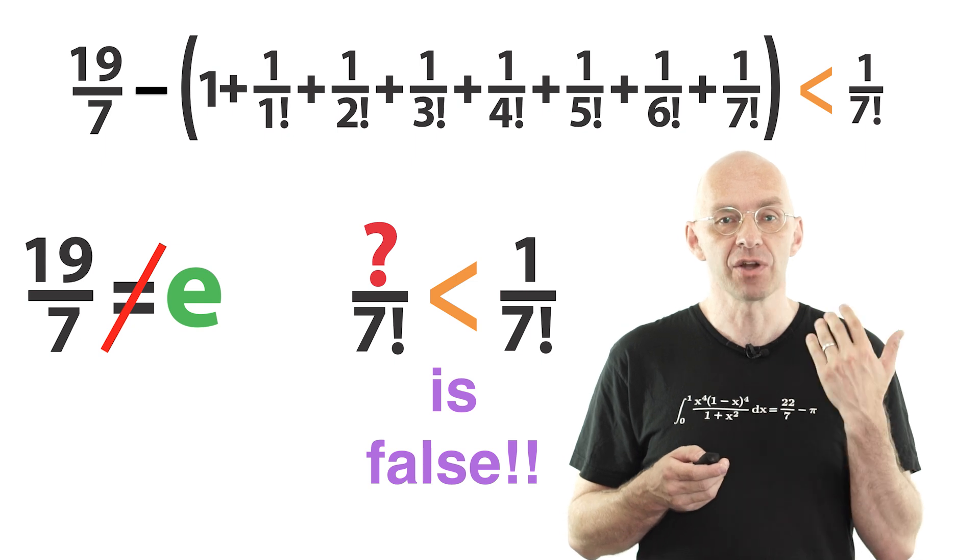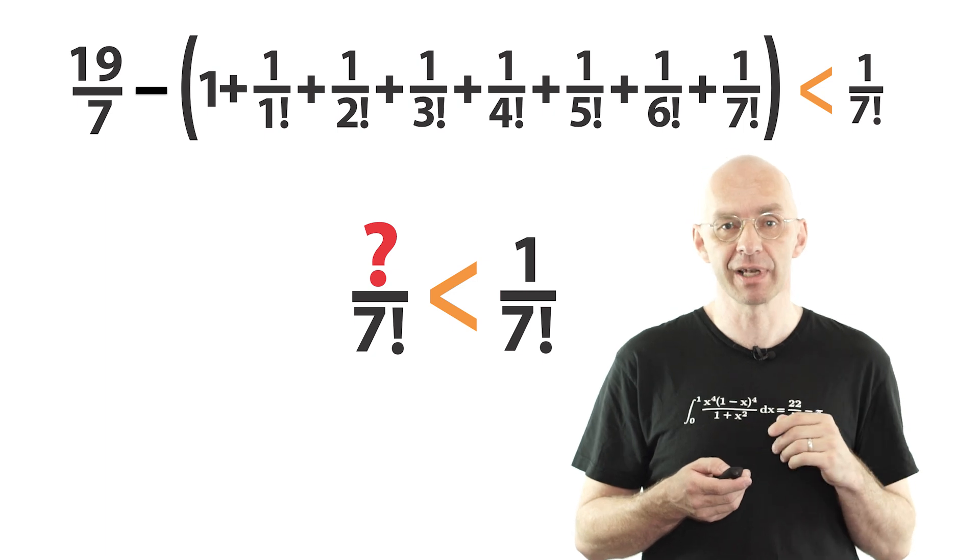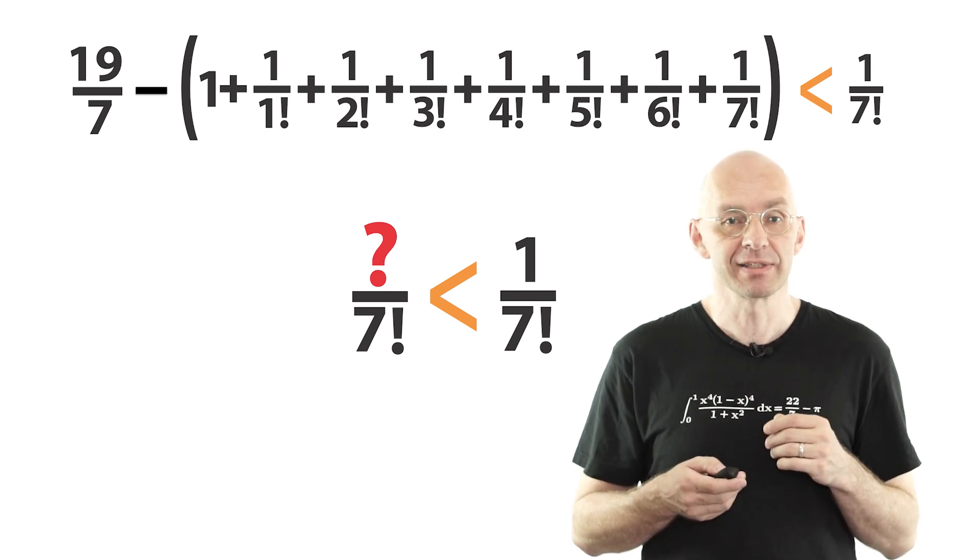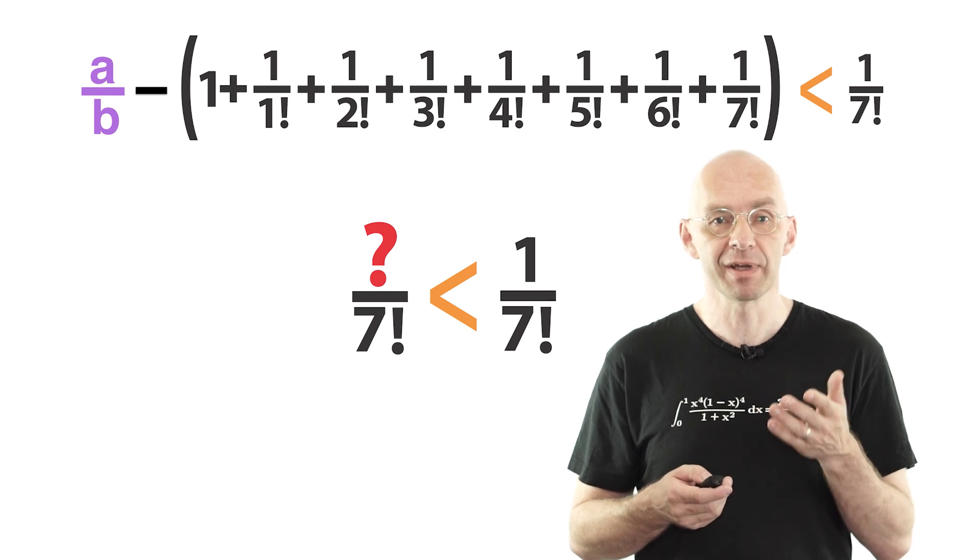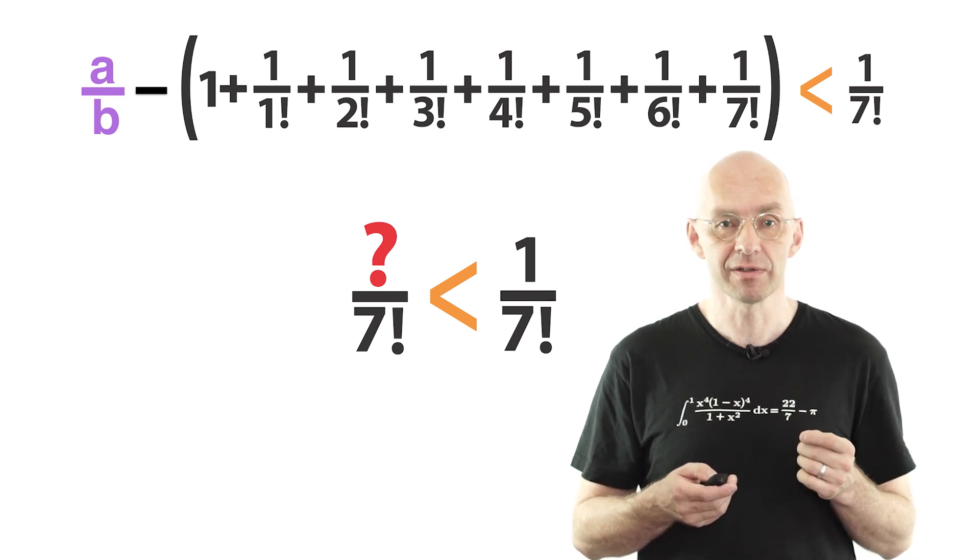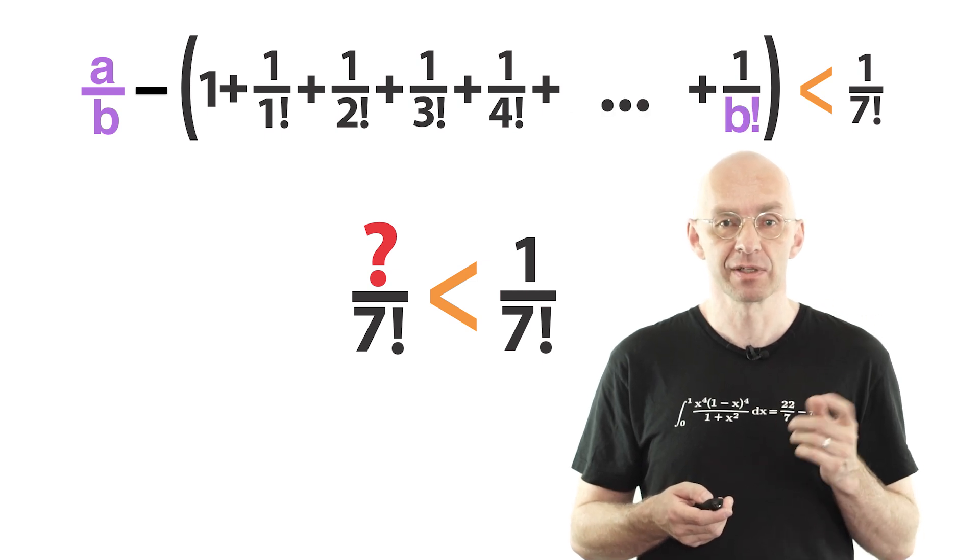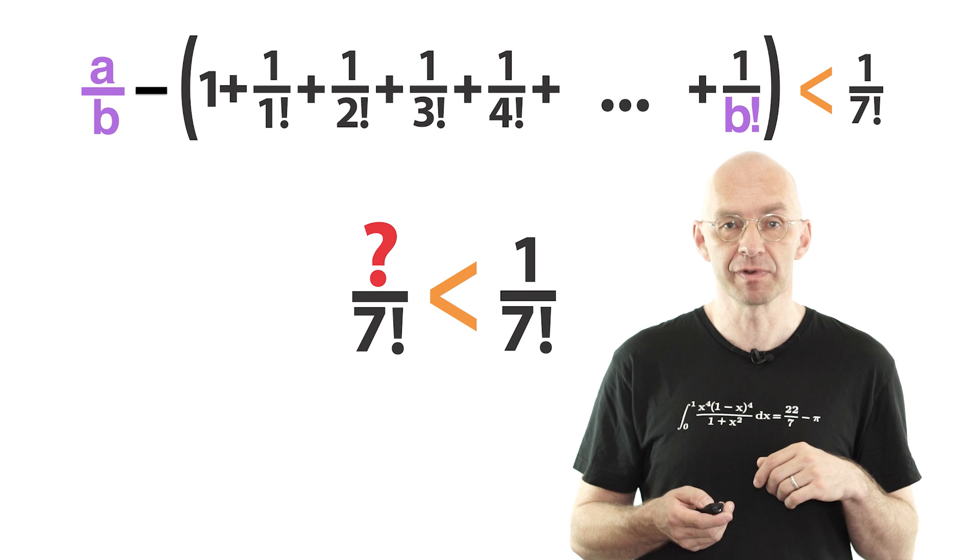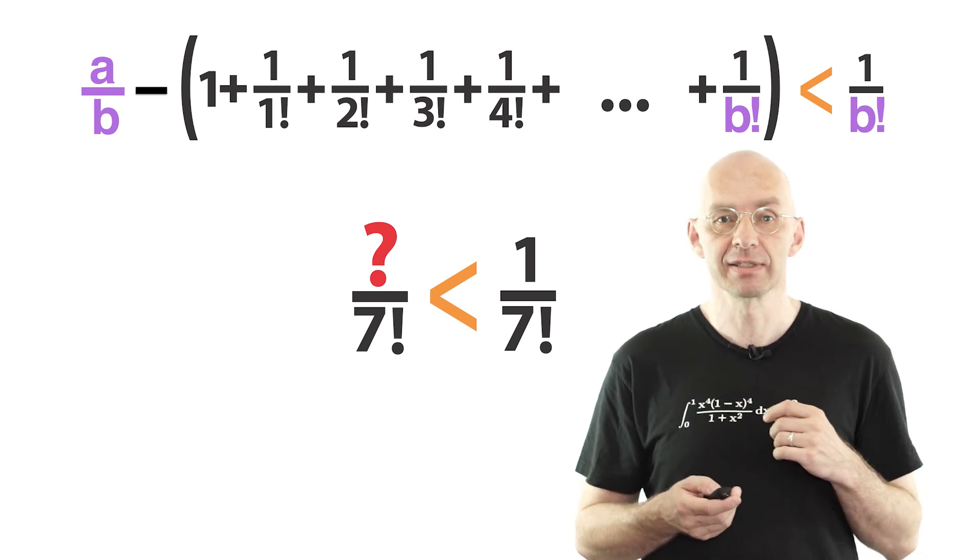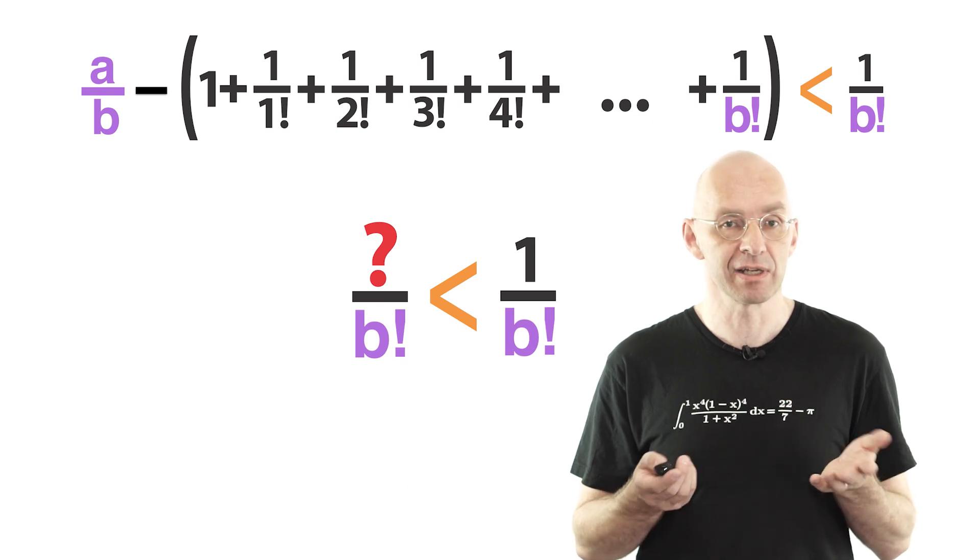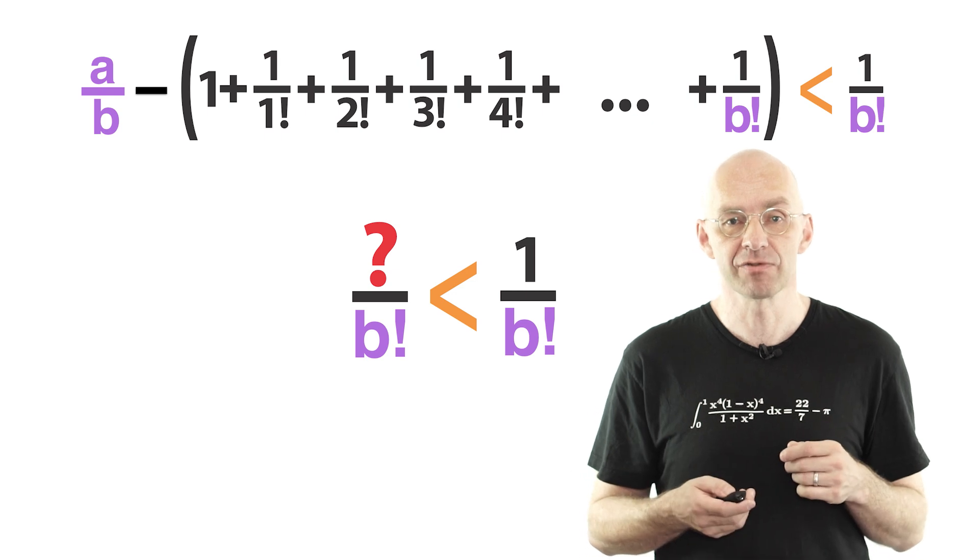To show that e is not equal to any fraction a over b, we simply have to adjust our argument like this. First, replace 19 over 7 by a over b. Then, instead of summing up to 1 over 7 factorial, we sum up to 1 over b factorial. The estimate then also changes to 1 over b factorial. And this statement down here is still impossible. Which implies that no fraction can be equal to e or, in other words, that e is irrational.